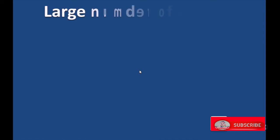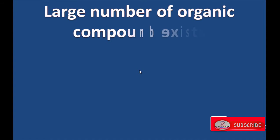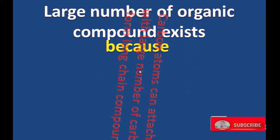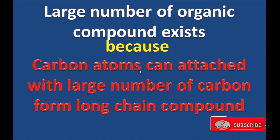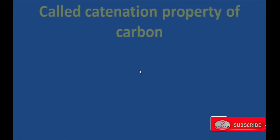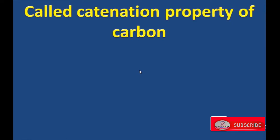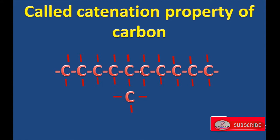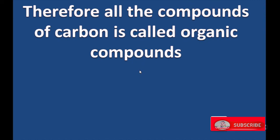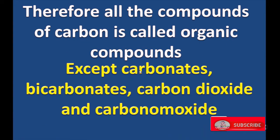A large number of organic compounds exist because carbon atoms can attach with a large number of carbon atoms to form long chain compounds. This property of carbon is called the catenation property. According to this, several carbon atoms can attach to each other to form a large number of compounds. Therefore, all the compounds of carbon are called organic compounds, except carbonates, bicarbonates, carbon dioxide, and carbon monoxide.